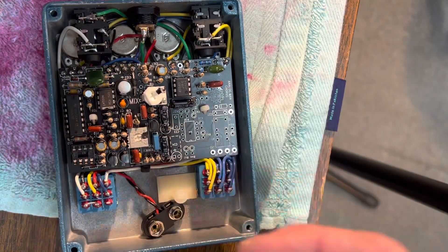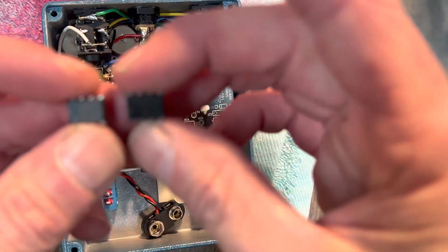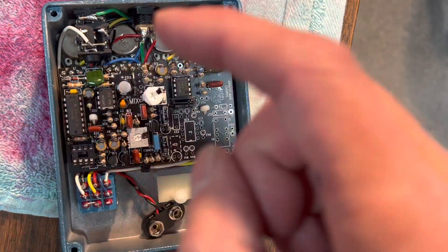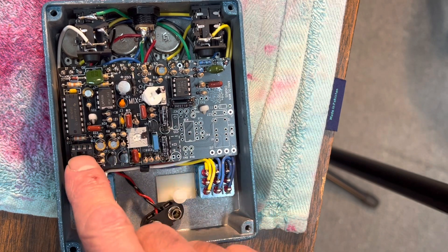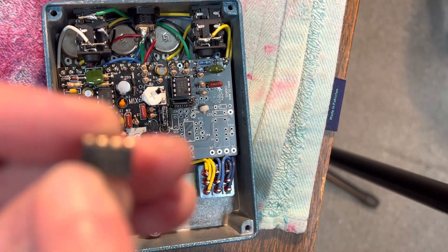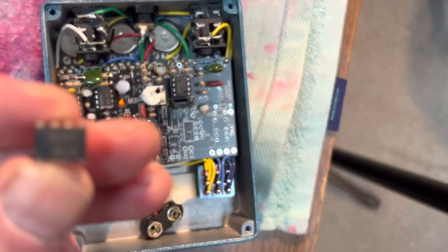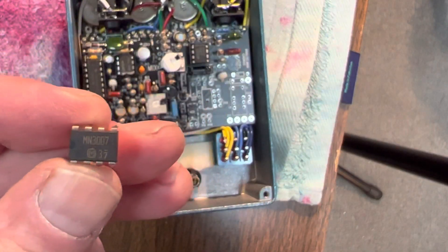So there's the old chip and here's the new chip. Make sure you put it in the same way. It's best to take a picture of the old chip before you remove it. Make sure the cutout and the little dot is in the right place.